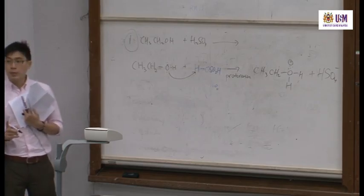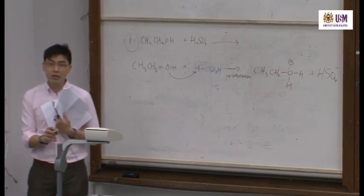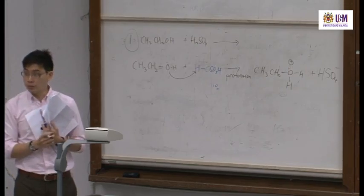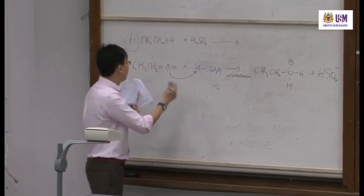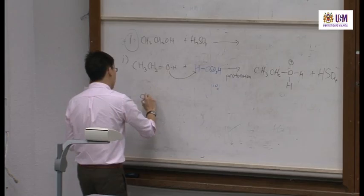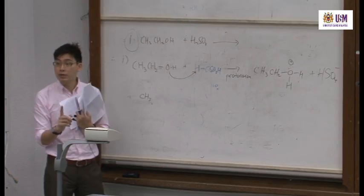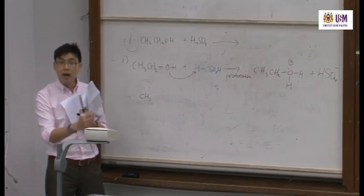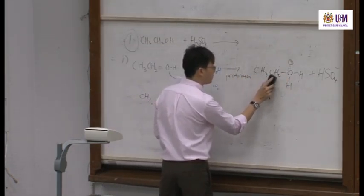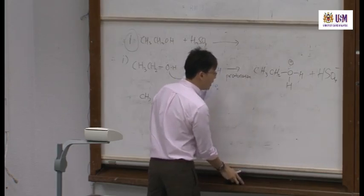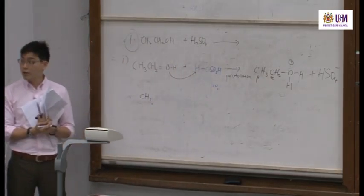The second step: because this is a dehydration reaction, the dehydration reaction means you remove a water molecule. This is a beta elimination reaction — you will remove an H from the beta carbon. This is the alpha carbon, and this is the beta carbon.